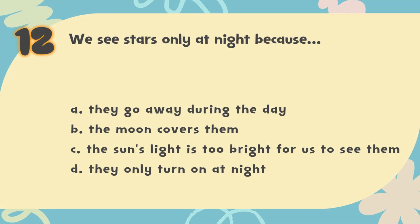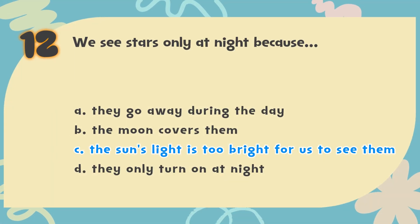The correct answer is C. The sun's light is too bright for us to see them. Stars are always in the sky, but during the day the bright light from our much closer sun overpowers the faint light from the distant stars.